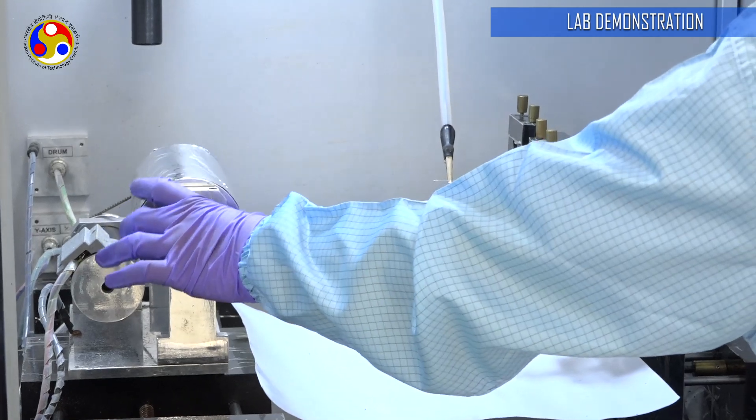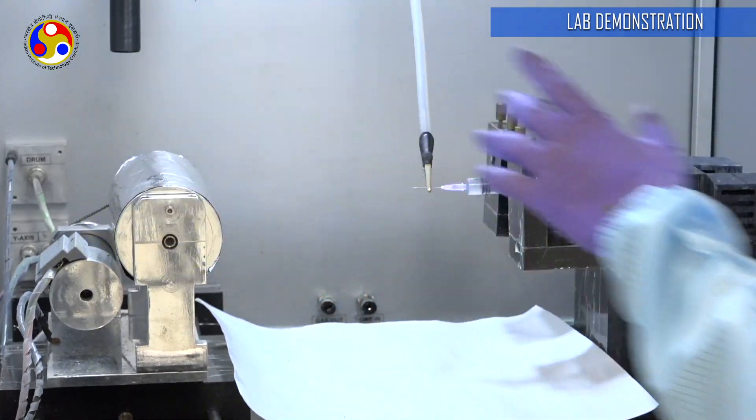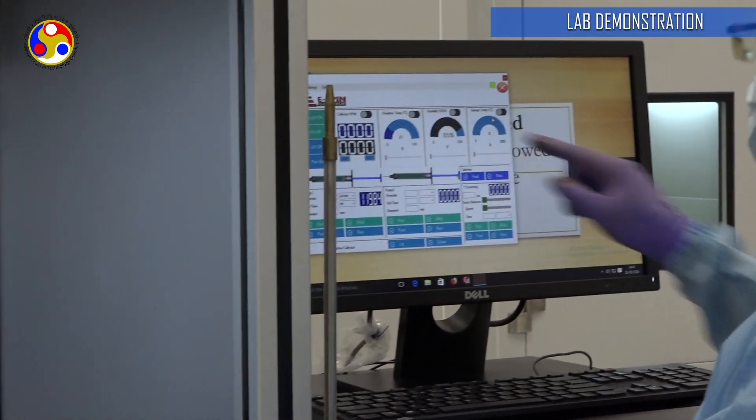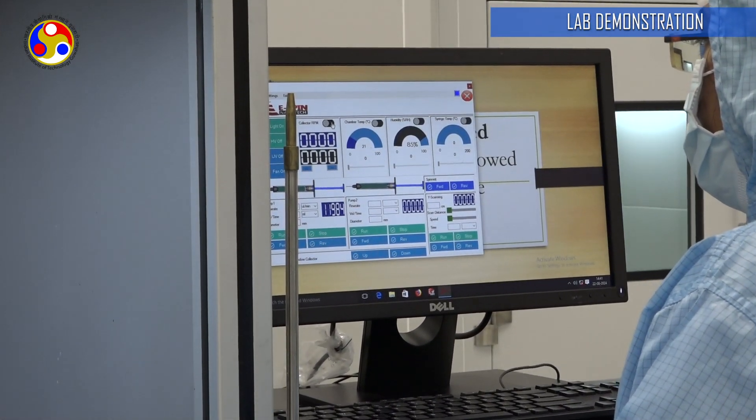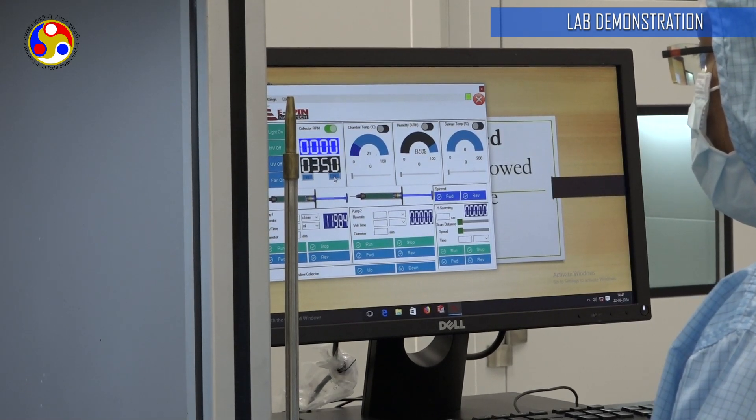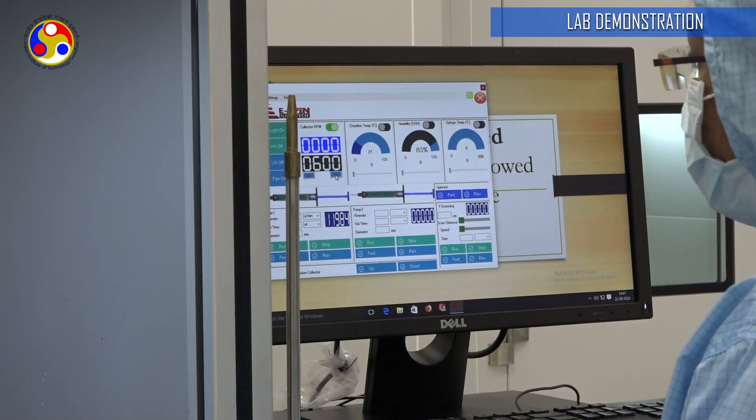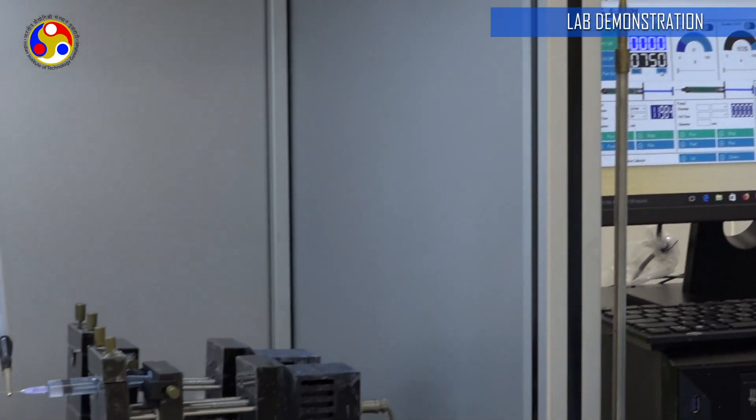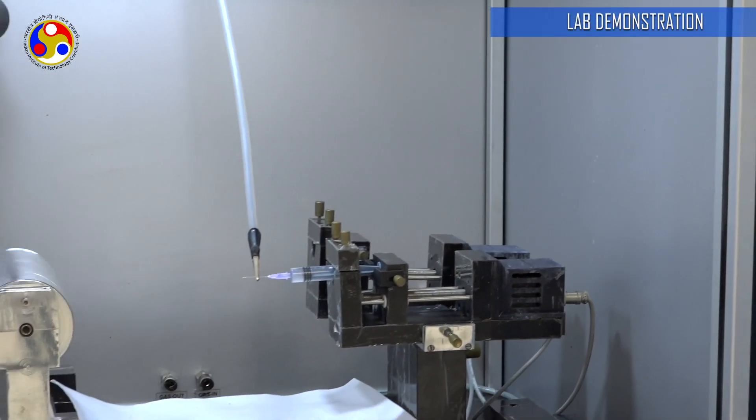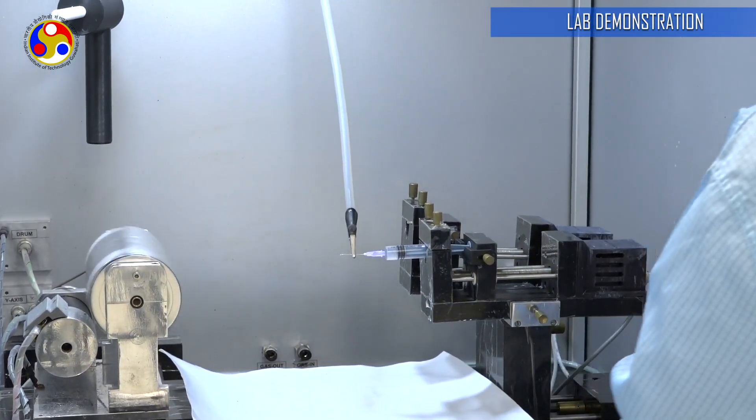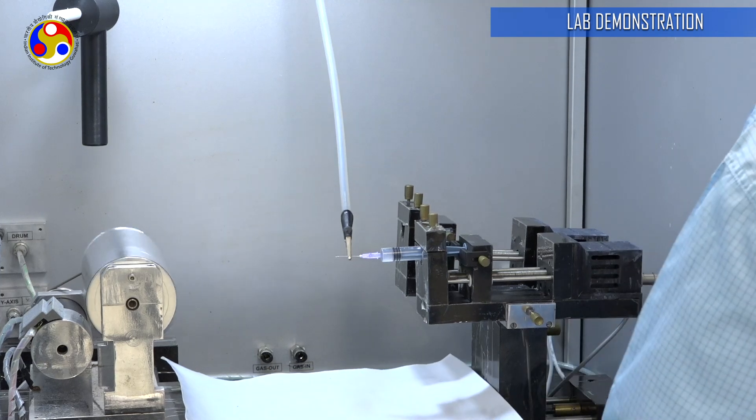The rotating speed of the drum collector can be adjusted through the software interface. Here you can see collector RPM. I am going to just press it on and I am going to give it a value of let's say 700 or 750 like that, 800. It all depends on your requirements.